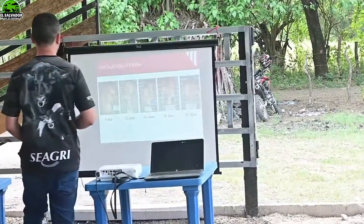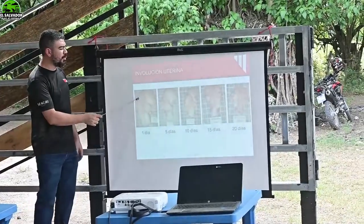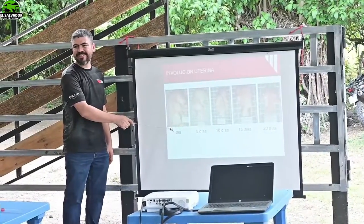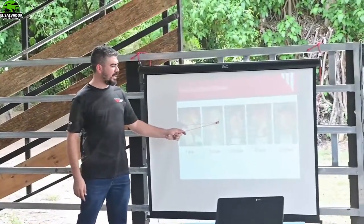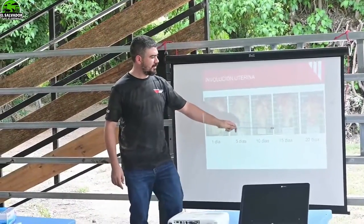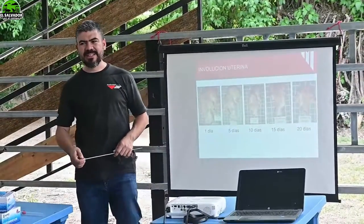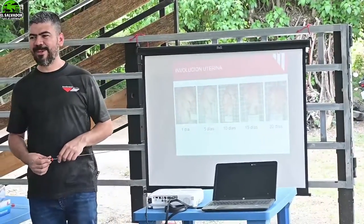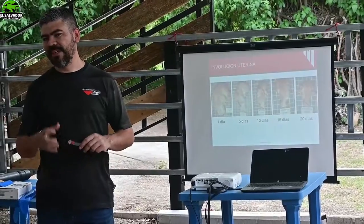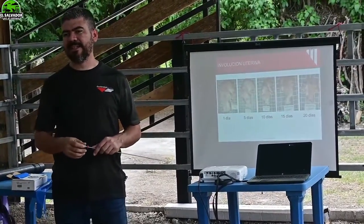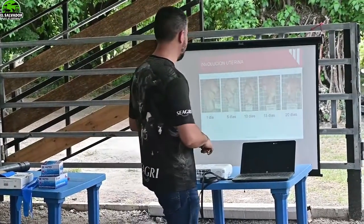Mainly because of this factor: when the cow calves, the uterine horn is still very inflamed. It is shrinking again, cleaning itself, gradually reducing in size. In approximately 20 days it returns to its normal size. Here in El Salvador, the majority of cows take a little longer to recover. So the uterus is still damaged — sometimes even the vagina is damaged — so it's preferable to do nothing during that period.